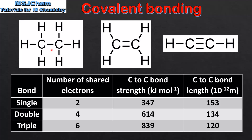A single covalent bond is represented by a straight line, a double covalent bond by two lines, and a triple covalent bond by three lines. In this table we can see the type of bond, the number of shared electrons, the carbon to carbon bond strength, and the carbon to carbon bond length. A single covalent bond is composed of 2 shared electrons, a double of 4 shared electrons, and a triple of 6 shared electrons — that is 1, 2, and 3 pairs of shared electrons respectively.